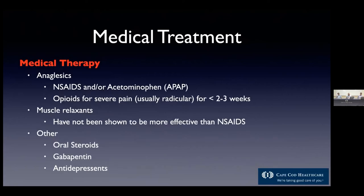In terms of medical therapy: NSAIDs and Tylenol are a plus. Opioids may be used for severe pain — usually radicular, meaning leg pain — for a very short duration. Chronic opioid therapy is not a treatment; that's a fairly universal message. Muscle relaxants have not scientifically been shown to be more effective than NSAIDs. Oral steroids such as methylprednisolone or prednisone are sometimes used. Gabapentin is commonly used, and antidepressants are another option.